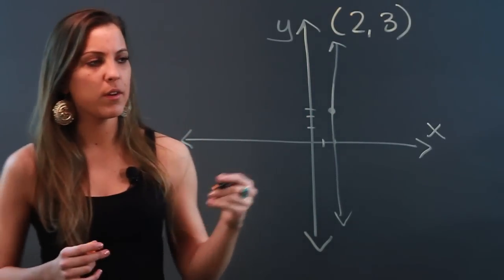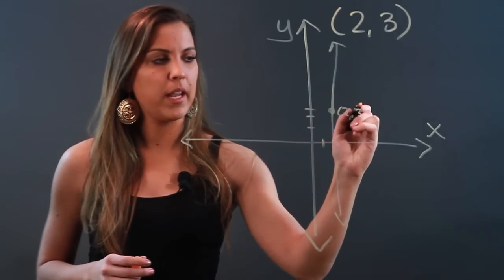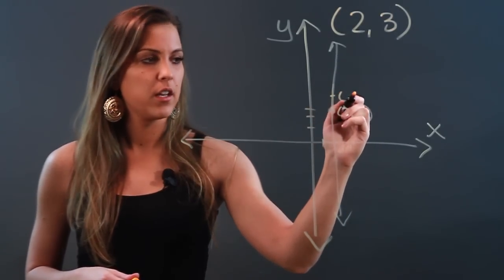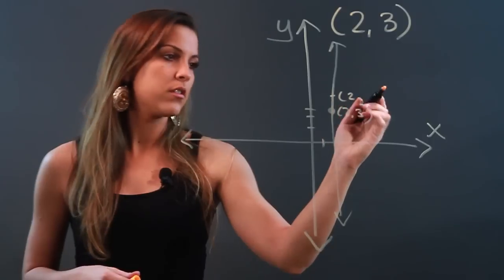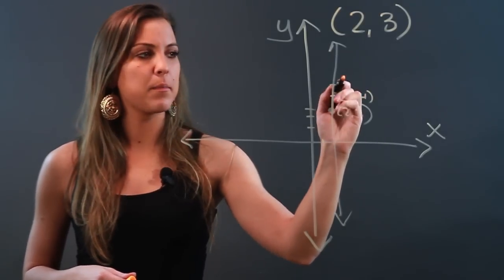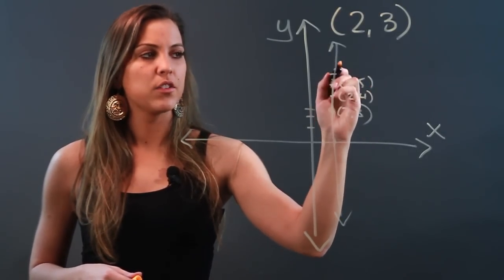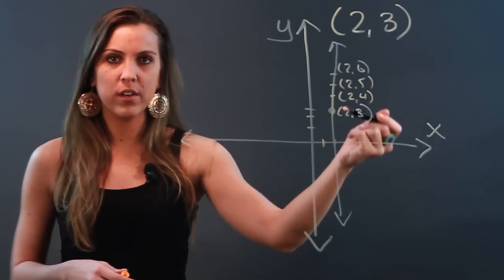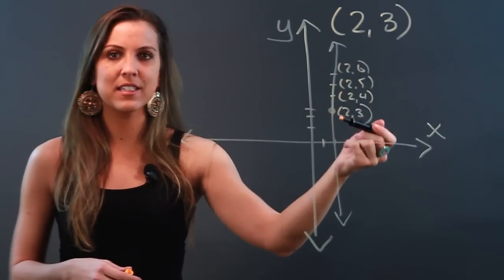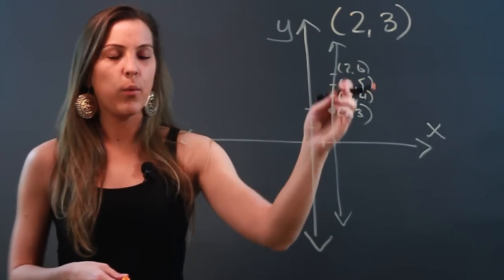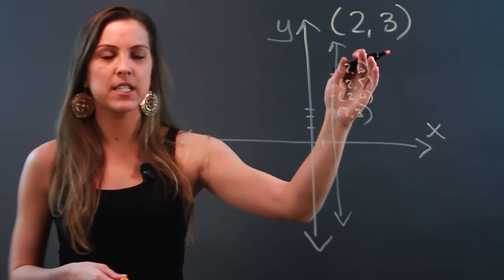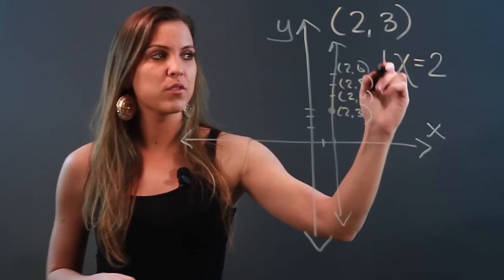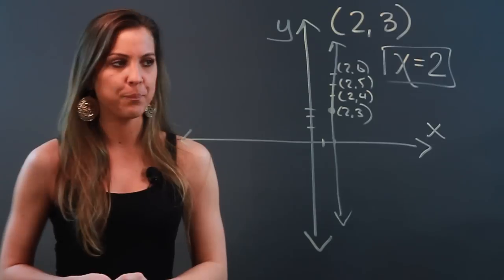Now what I notice is that this is the point (2, 3), and if I plot any other point on this line — for example, this is the point (2, 4), this is the point (2, 5), (2, 6), and so on — my x-coordinate is constantly 2. So the equation for this vertical line that passes through that point is x equals 2.